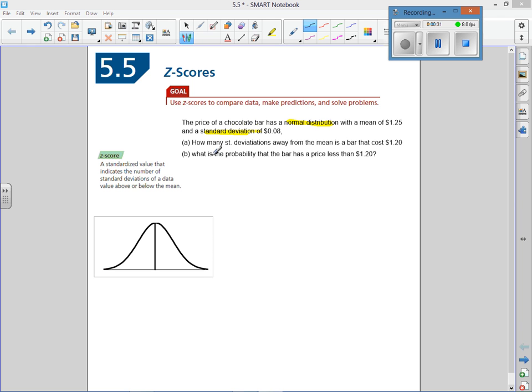We have to keep in mind that the data has to be normally distributed and have a standard deviation in order to do these questions. Question A asks how many standard deviations away from the mean is a bar that costs $1.20. For question A, we have a mean or mu of $1.25, and a standard deviation or sigma of 8 cents.